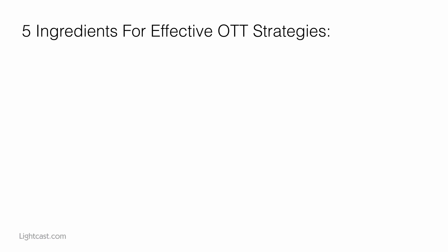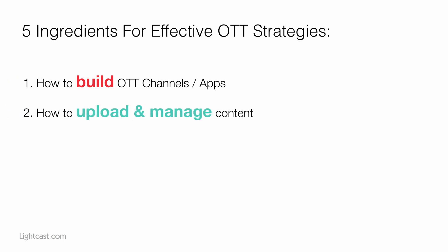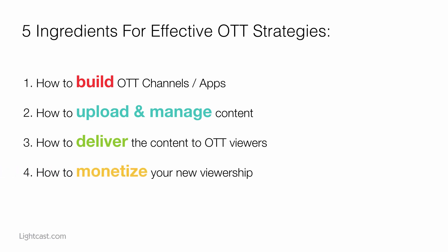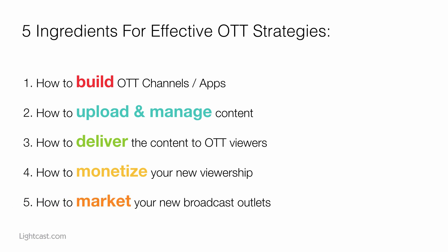There are five major ingredients for effective OTT strategies: how to build OTT apps and channels, how to upload and manage content, how to deliver the content to OTT viewers, how to monetize new viewership, and how to market your new OTT broadcast outlets in order to keep your viewership growing.